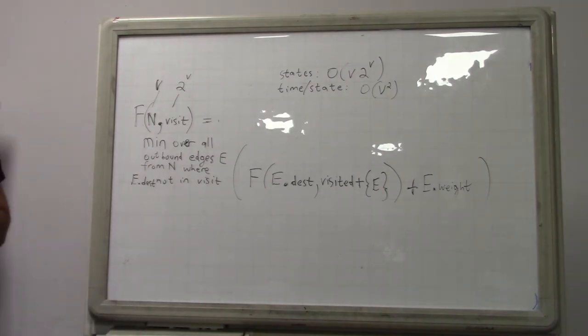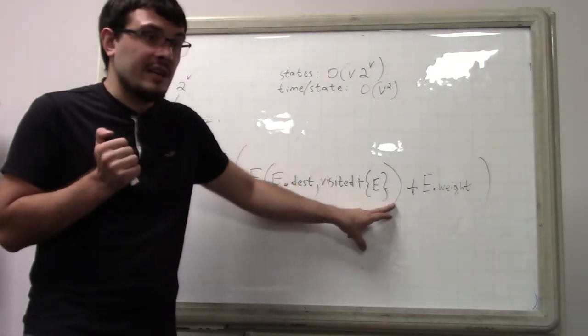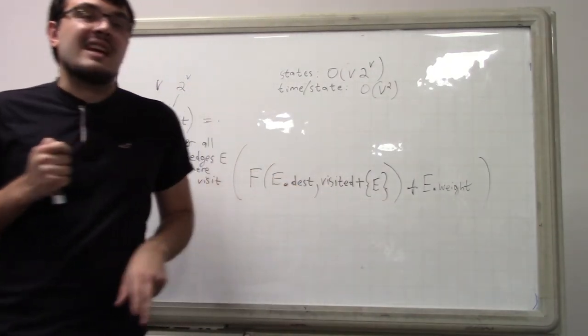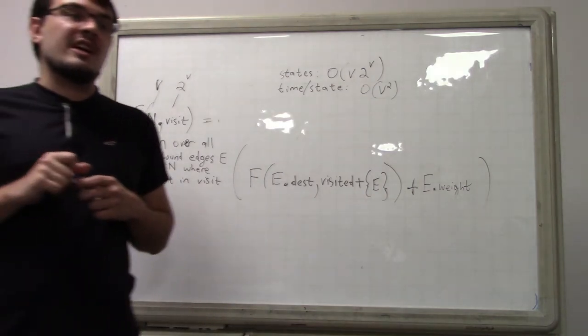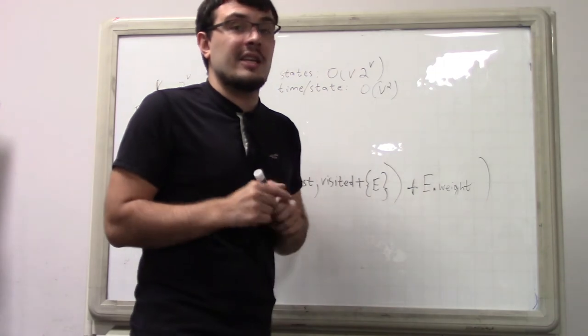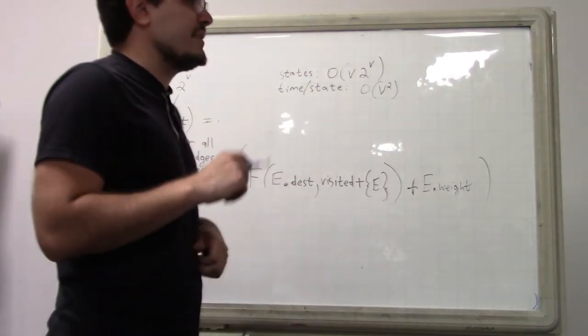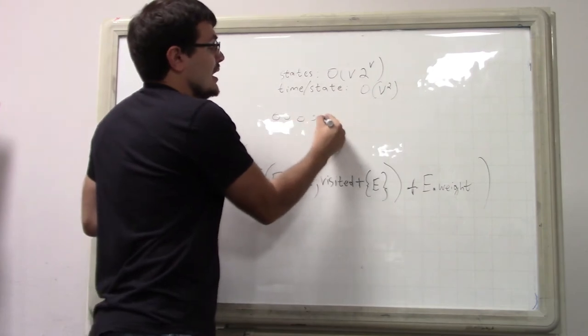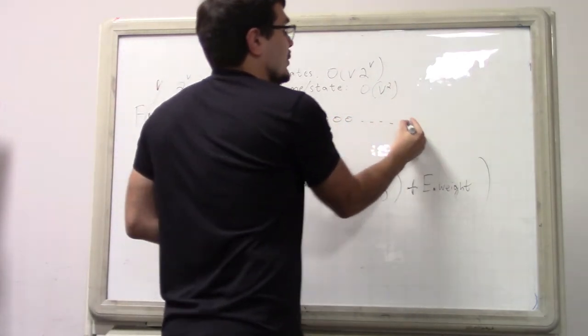So we can assume that this will not run on more than 64 vertices. We can make that a precondition. And then what we can do is to encode this set efficiently. What we can do is instead of making it like a set of integers in a hash map or something, we can instead just encode it as an integer by using the bits in a 64-bit long.